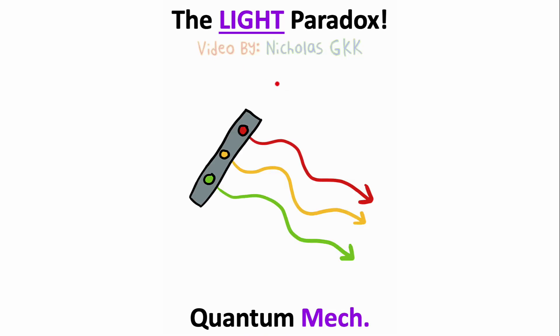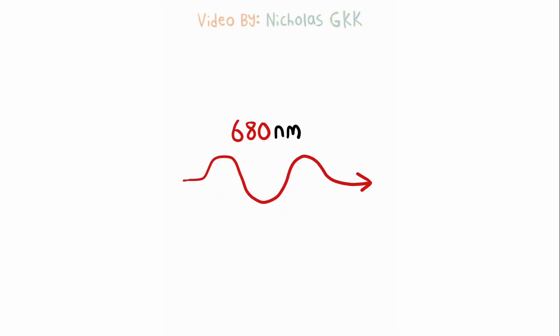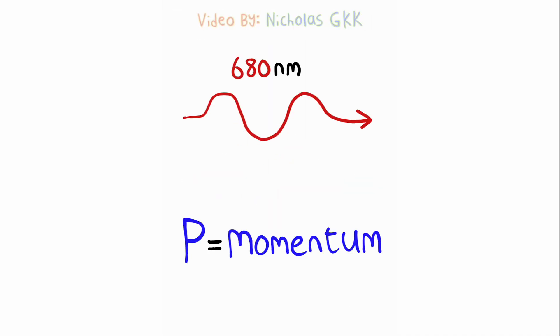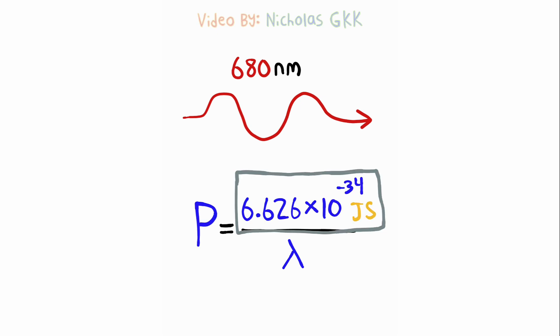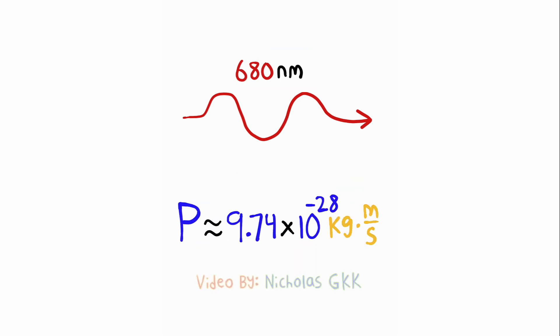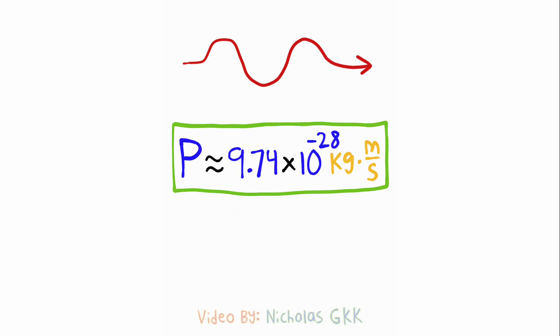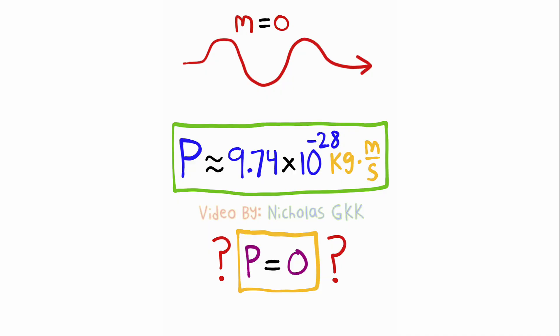There's something really fishy about quantum mechanics when we're given a light wave and asked to find momentum. Because we can use this basic formula with Planck's constant to solve for the momentum. However, this value seems odd considering the fact that light has no mass. Therefore, it can't possibly have momentum, right? So what is the contradiction here?